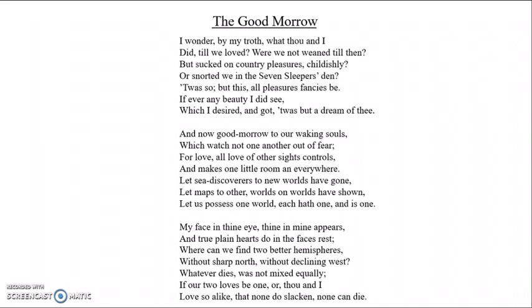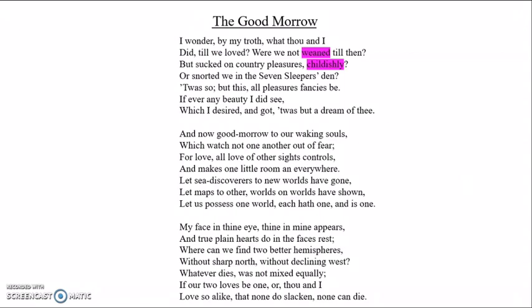It's a poem made up of three septets — three stanzas of seven lines. The first stanza introduces the idea that the lives the two lovers led before they met were essentially meaningless. Donne begins with the rhetorical question, 'I wonder by my troth what thou and I did till we loved,' which immediately sets up this idea. He goes on to use words associated with childhood, such as 'weaned' and 'childishly,' suggesting that the lives the two lovers led before they met lacked the mature perception we associate with adulthood.